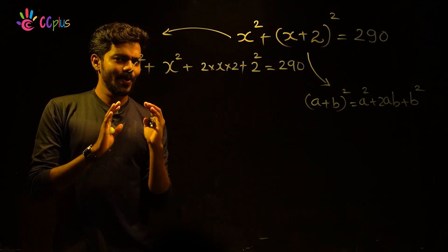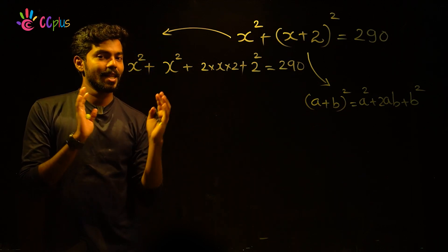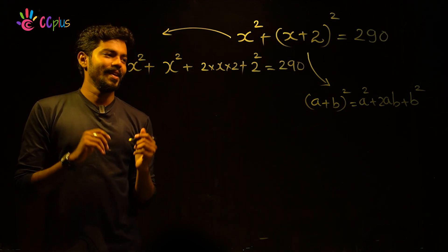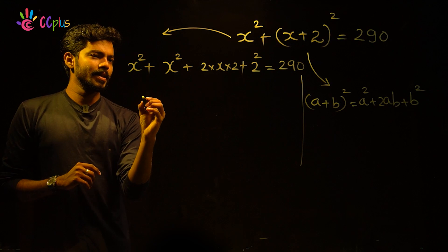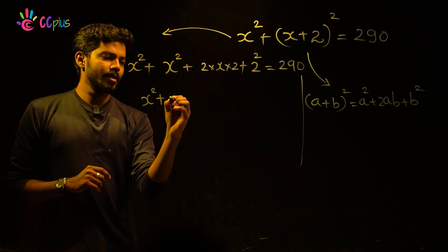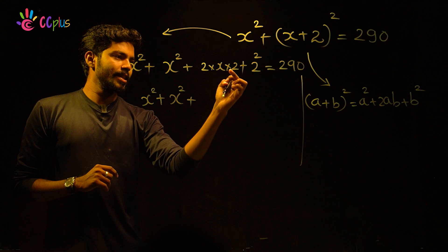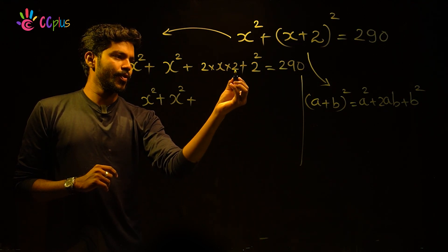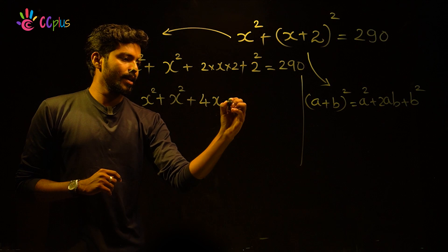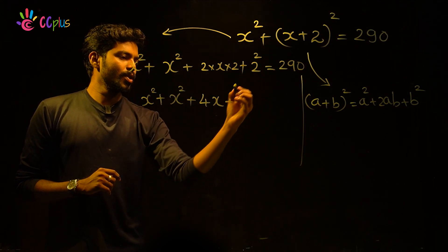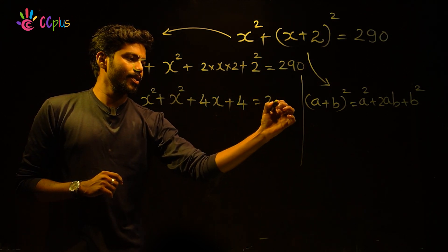So expanding: x squared plus x squared plus 2 into x into 2 plus 2 squared equals 290. That gives us: 2 into 2 is 4, and 4 into x is 4x, plus 4 equals 290.